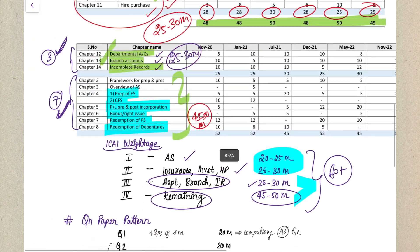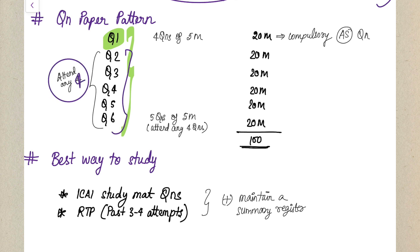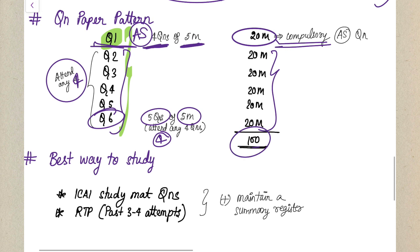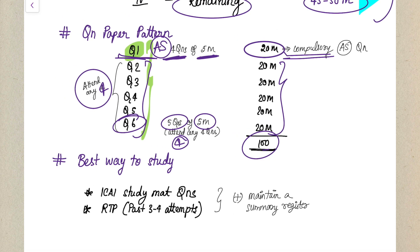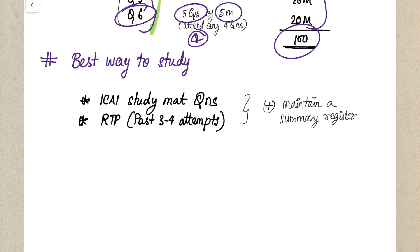Now let's quickly discuss the question paper pattern. There are six questions in total. Question one is compulsory — it tests all the Accounting Standards and consists of four questions of five marks each, totalling 20 marks. The remaining five questions are each worth 20 marks, and you must attempt any four of them. This gives a 100-mark paper overall.